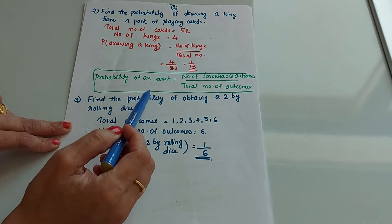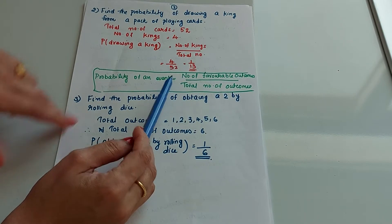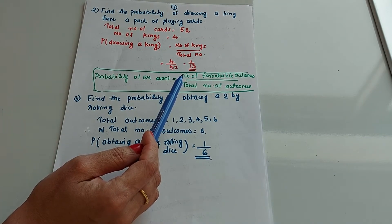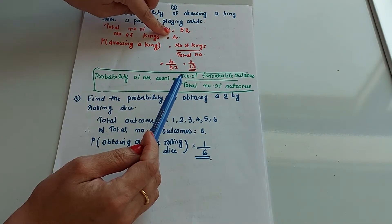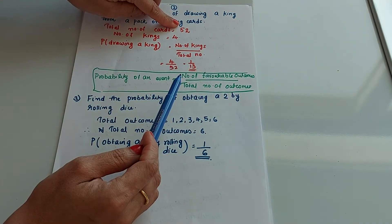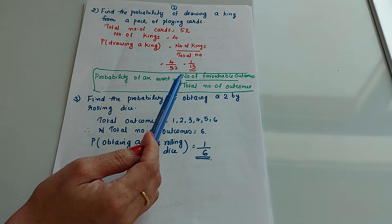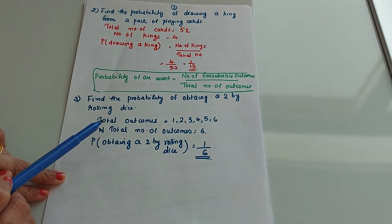Probability of an event equals number of favorable outcomes divided by total number of outcomes. Here, the favorable outcome is drawing a king, and there are four kings, so the number of favorable outcomes is 4. The total number of cards is 52. So probability equals 4 by 52, which equals 1 by 13.